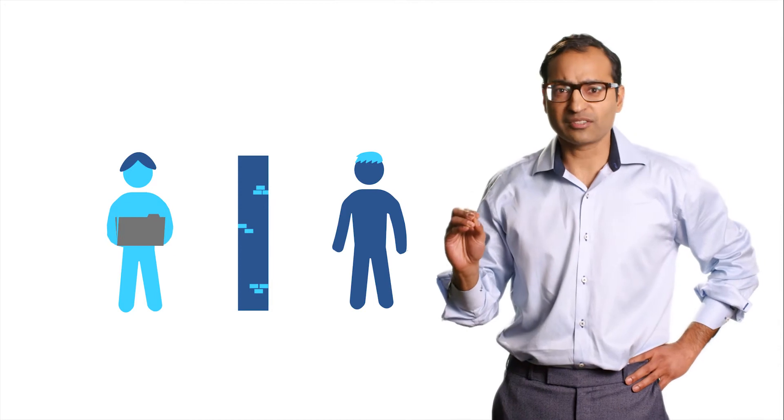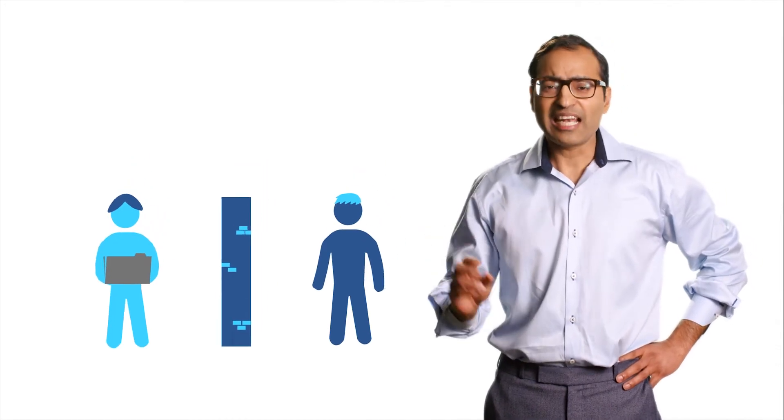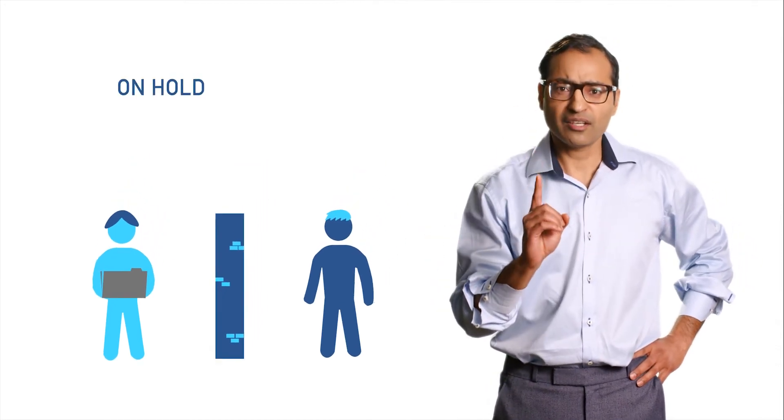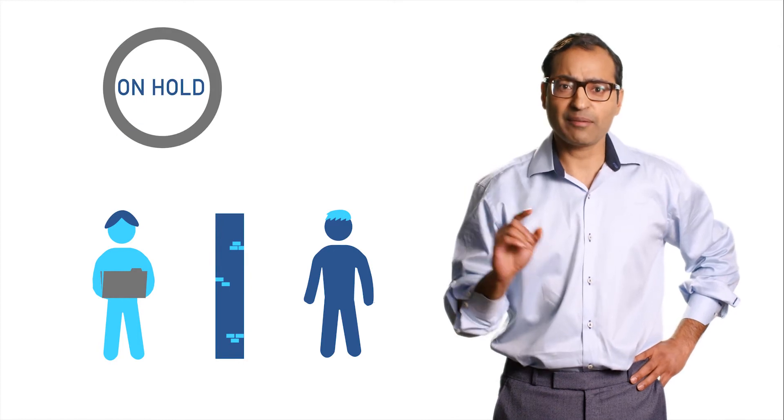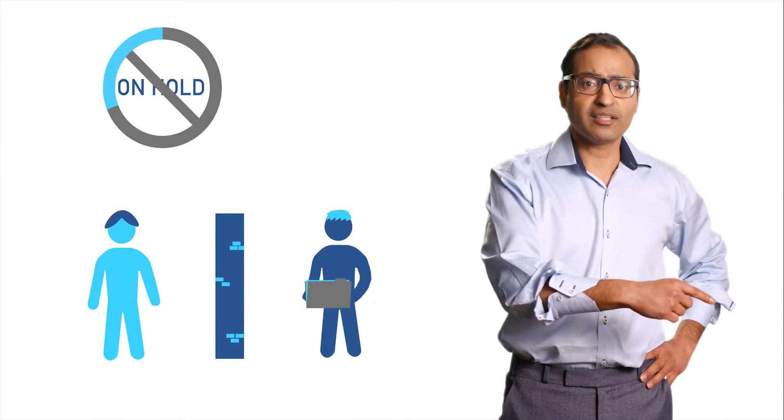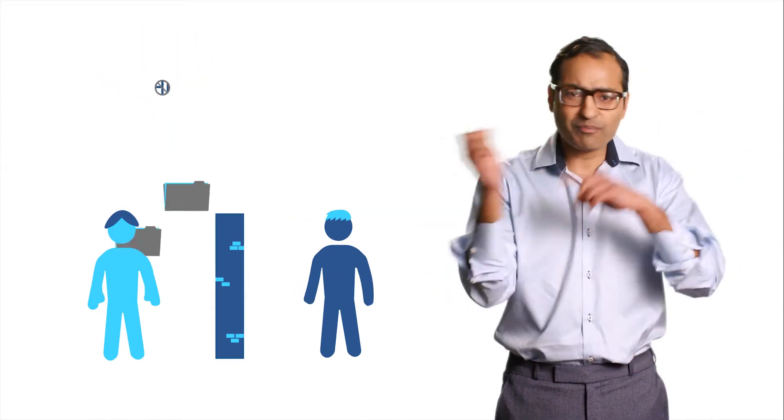They throw it over the proverbial wall to the PCB fabrication shop. And if there's one thing wrong, one thing designed outside of the capabilities of the fabrication shop, the fab shop throws it back over to the design. And back and forth madness starts.